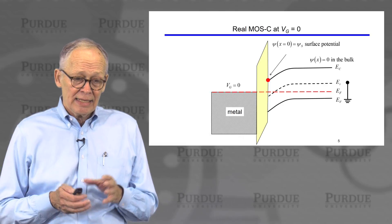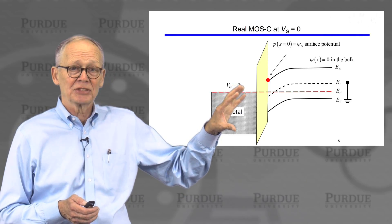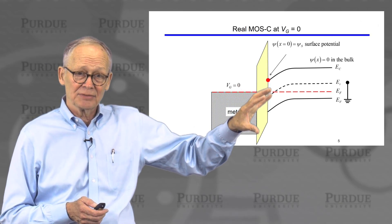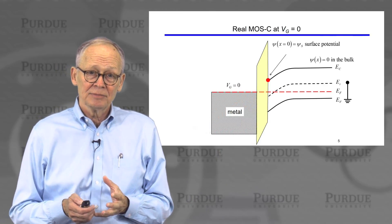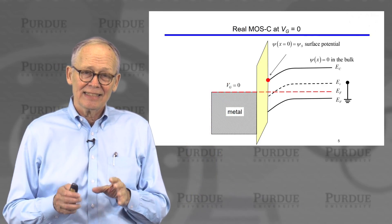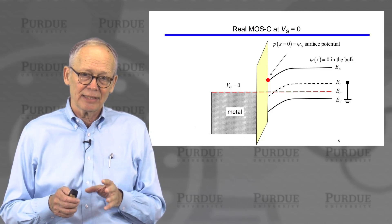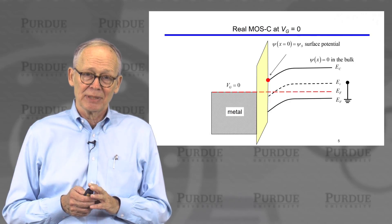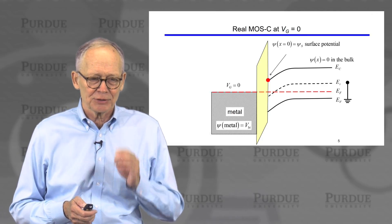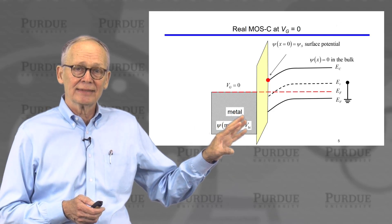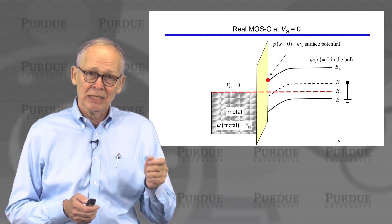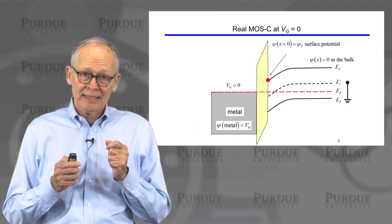If we put everything together, we're going to have a MOS energy band diagram that looks in the semiconductor as though we've applied a positive gate voltage — we have a positive surface potential, we've pulled the bands down, and we're depleting the surface of the semiconductor — but we have applied zero volts to the gate. It is the built-in voltage already present in equilibrium that is responsible for this band bending. The potential in the semiconductor is this built-in potential, even when we apply zero volts on the gate.